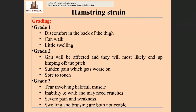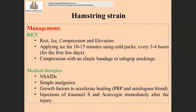Grade three hamstring strain involves tearing of the full muscle — partial or complete rupture. The person is unable to walk and may need crutches. There is severe pain, weakness, and considerable swelling and bruising in the injured area.